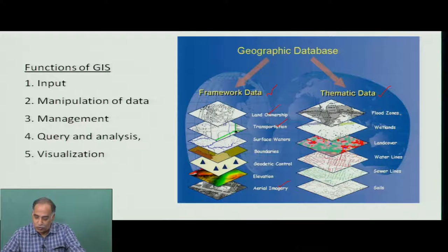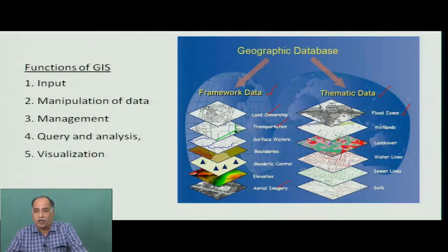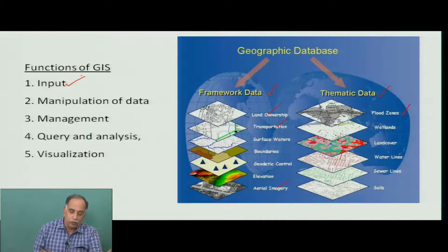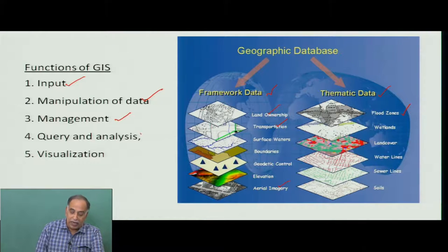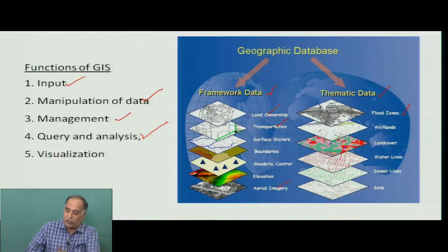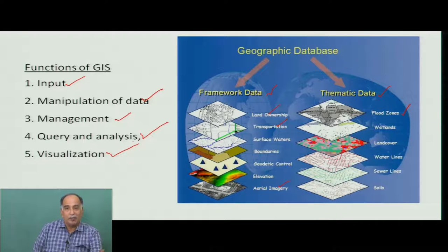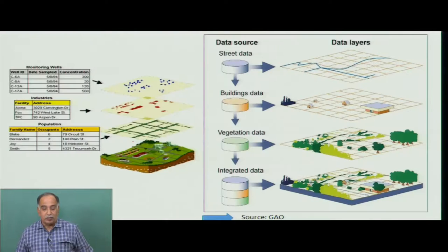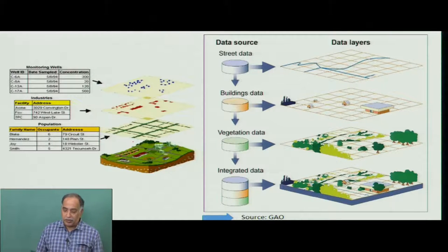For example, if we are interested in identifying which areas are likely to come under flood zones during a particular event, GIS enables that analysis. There are also several functions in GIS: one is input — how and where data is taken in; manipulation — adjusting data types to a common platform; management, query, and analysis — producing the desired thematic information; and visualization — presenting results either in the form of a map, a table, or a pie chart so that results can be presented to decision-making bodies.